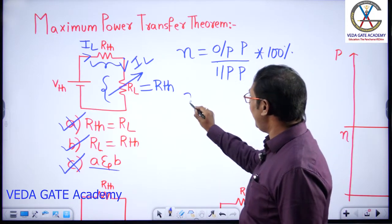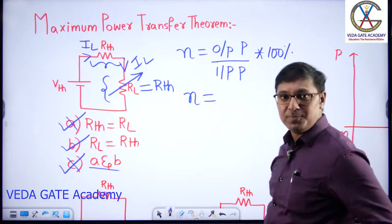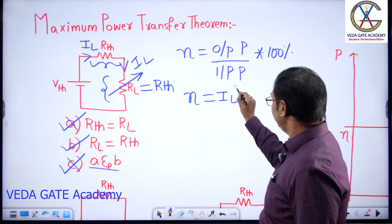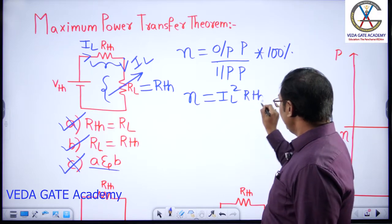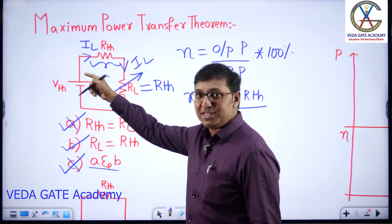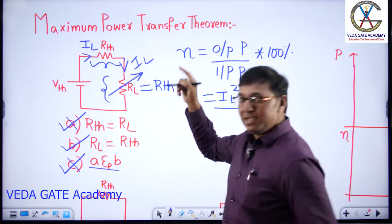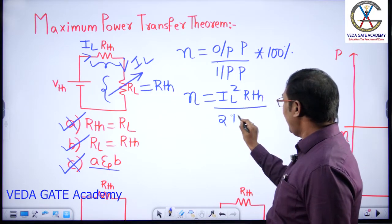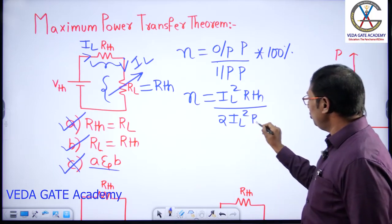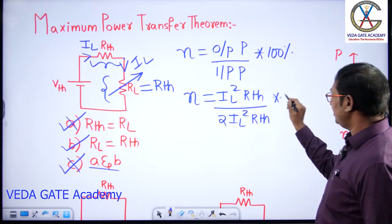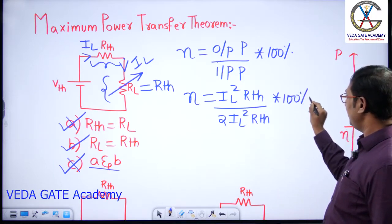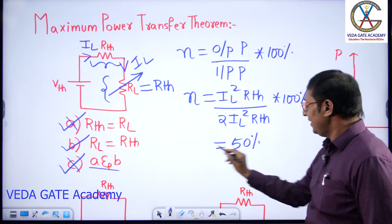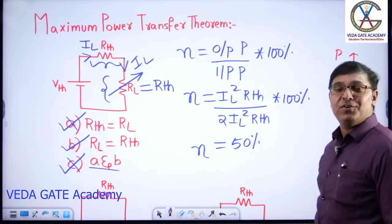Putting those values into the efficiency formula: efficiency equals IL² × RTH (output) divided by IL² × RTH + IL² × RTH (input), which simplifies to IL² × RTH divided by 2 × IL² × RTH, times 100 percent. Efficiency is 50 percent.